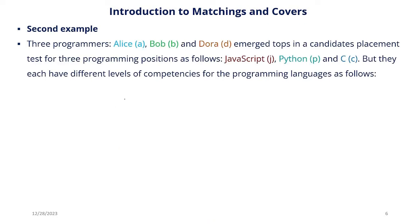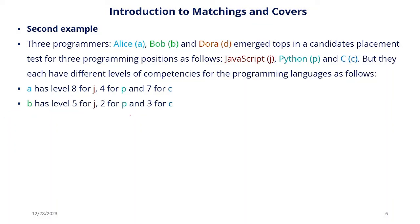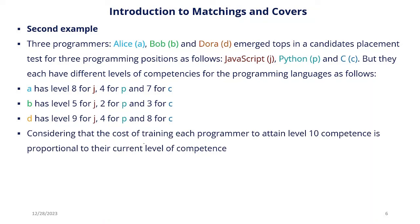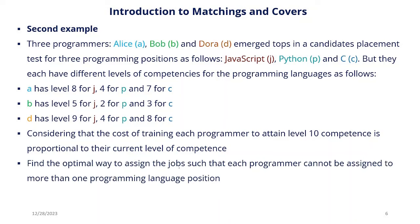The second example: suppose there are three programmers — Alice, Bob, and Dora — who emerge tops in a placement test for three programming positions: JavaScript (J), Python (P), and C. Each has different competency levels: A has level 8 for J, 4 for P, and 7 for C; B has level 5 for J, 2 for P, and 3 for C; D has level 9 for J, 4 for P, and 8 for C. The cost of training each programmer to the highest level (level 10) is proportional to their current competence level. The problem is to find the optimal way to assign the jobs such that each programmer cannot be assigned to more than one programming language position.